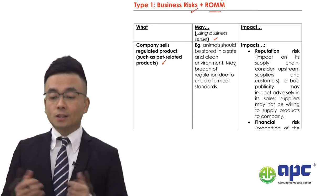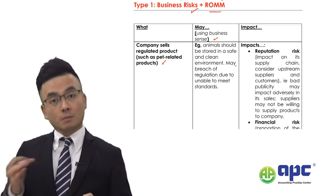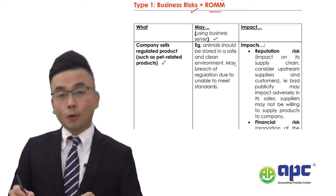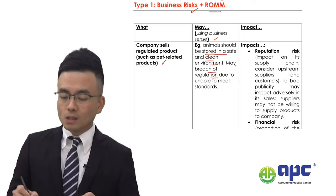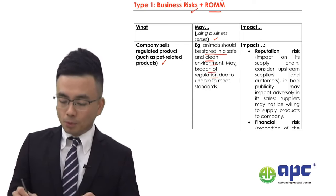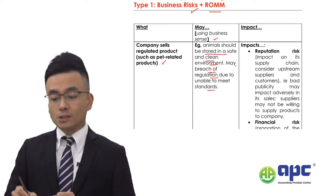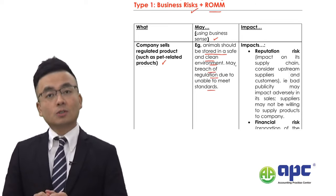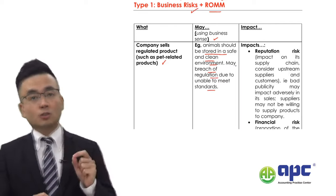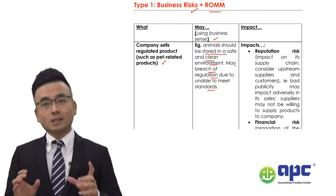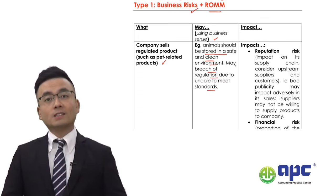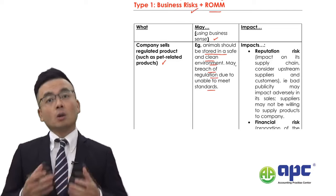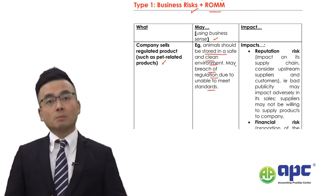Using your business sense — for example, animals should be stored in a safe and clean environment — it may be a breach of regulation because the client's company may not be able to meet the standard. Make sure that when you say 'may', you bring common sense in, bring the case information in, and expand your answer a bit further.